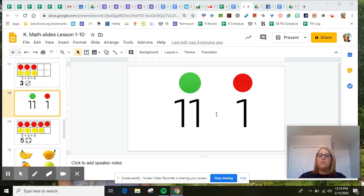Let's take a look at the number that is under the green dot. It is the number 11. What number's under the red dot? You're right, it's the number one.